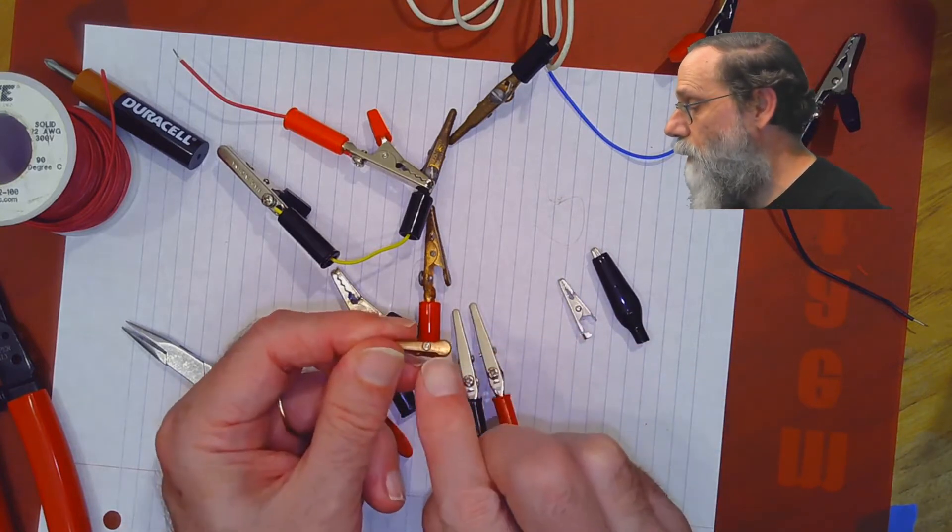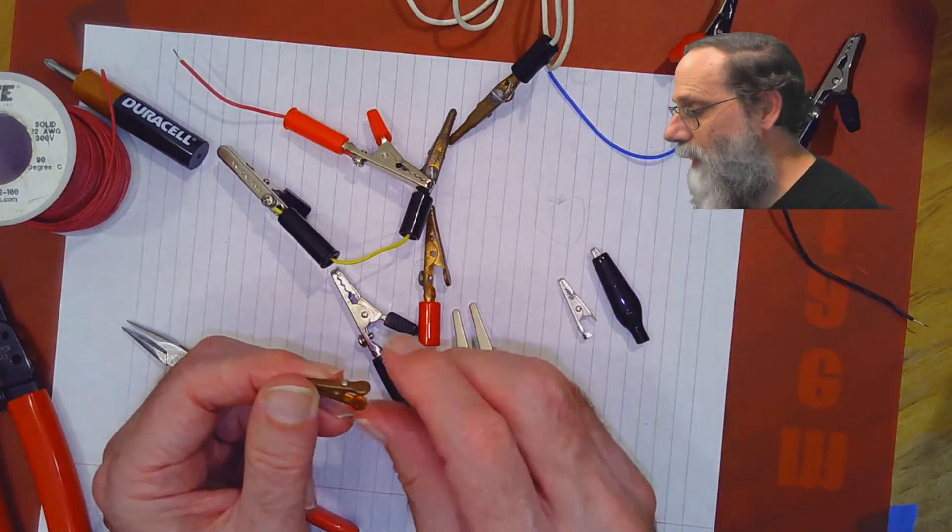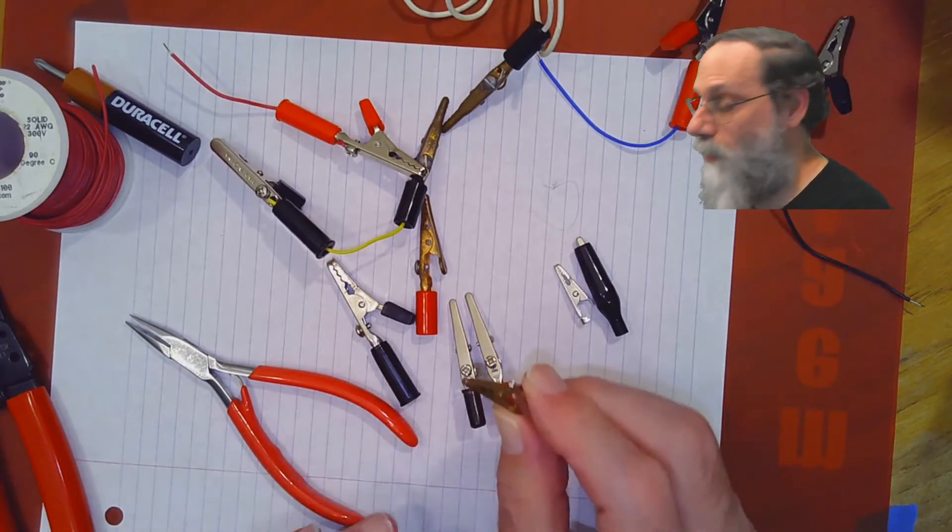Some really tiny ones don't even have any place to thread the wire through, and you just sort of take it off the side here. That tends not to be very sturdy, but then these little clips are only used for very small wires.